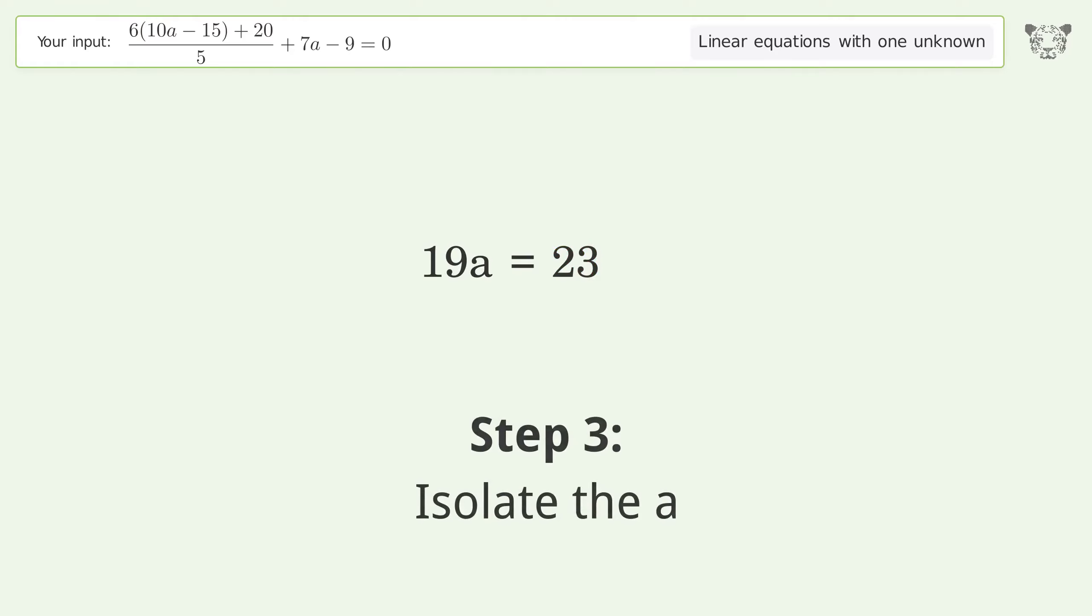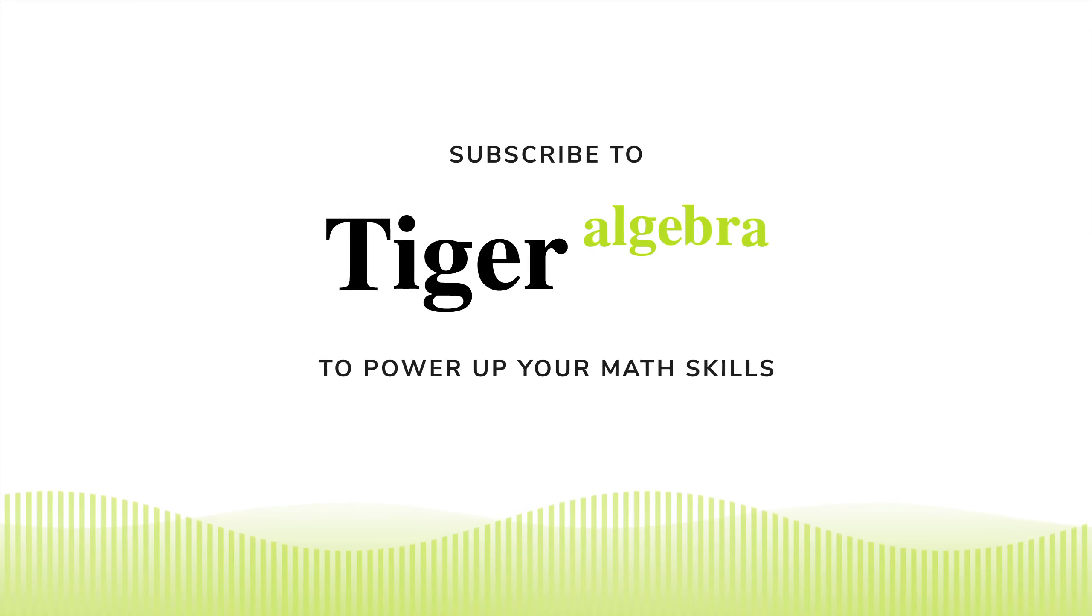Isolate the a. Divide both sides by 19. Simplify the fraction. And so the final result is a equals 23 over 19.